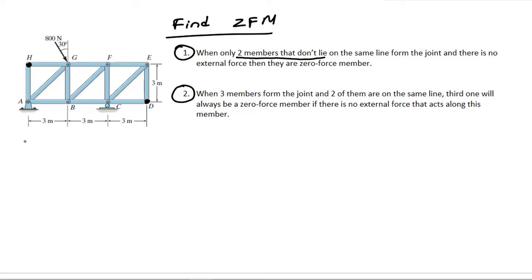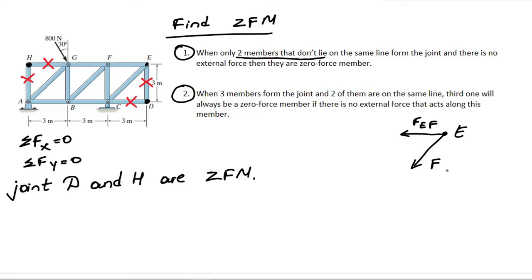Both of these conditions tell me that members at joint D and H are zero force members. After getting rid of zero force members, I see that E joint has also two members left that don't lie on the same line. Then members at E also will be zero force members. By the way, even if you write equilibrium equations, you'll get same results.